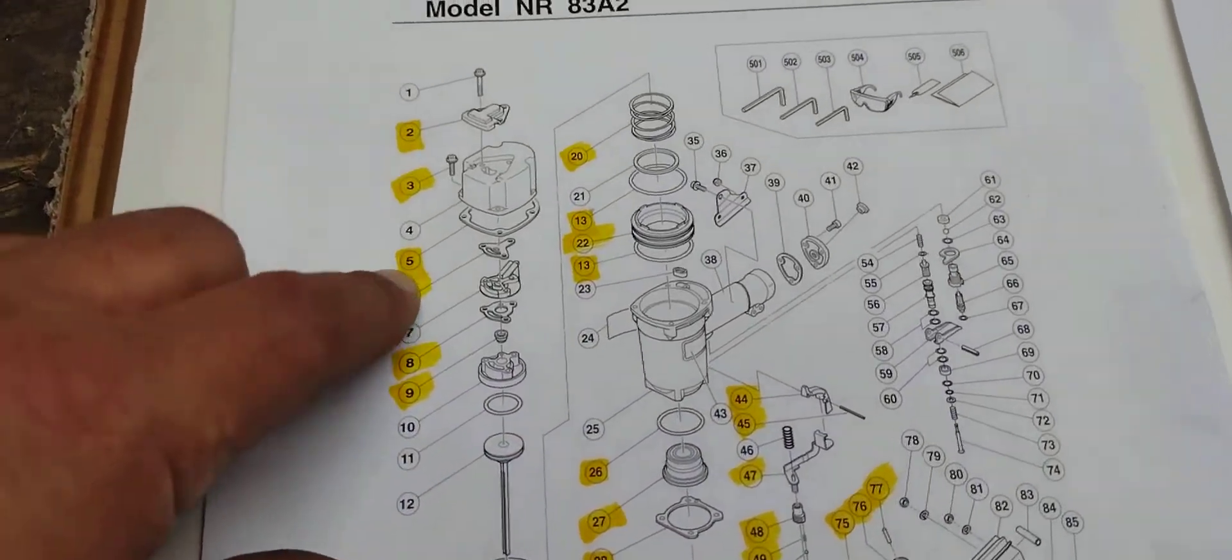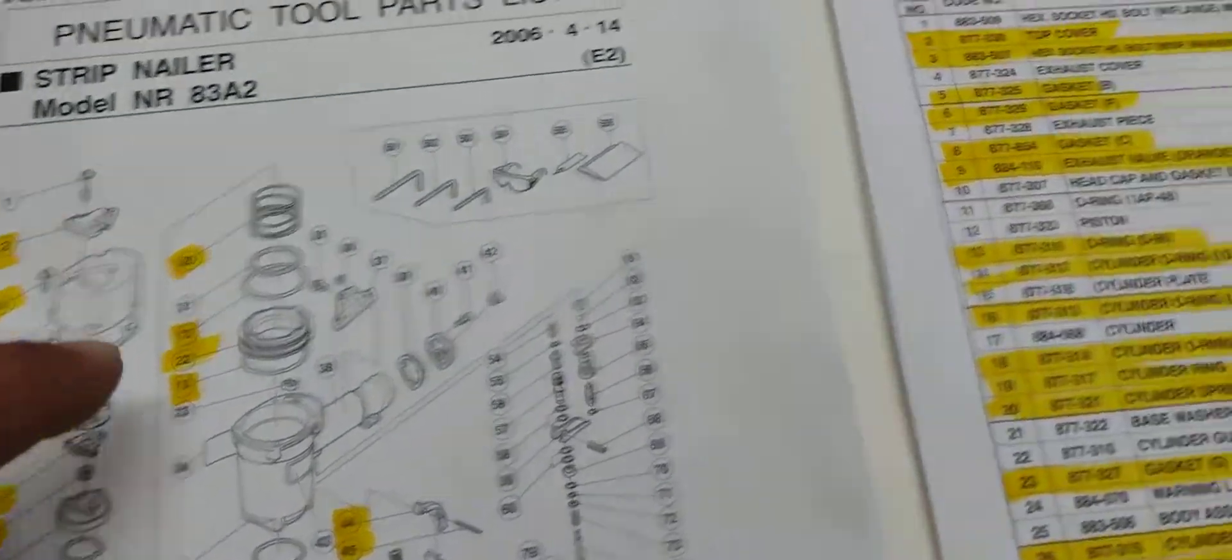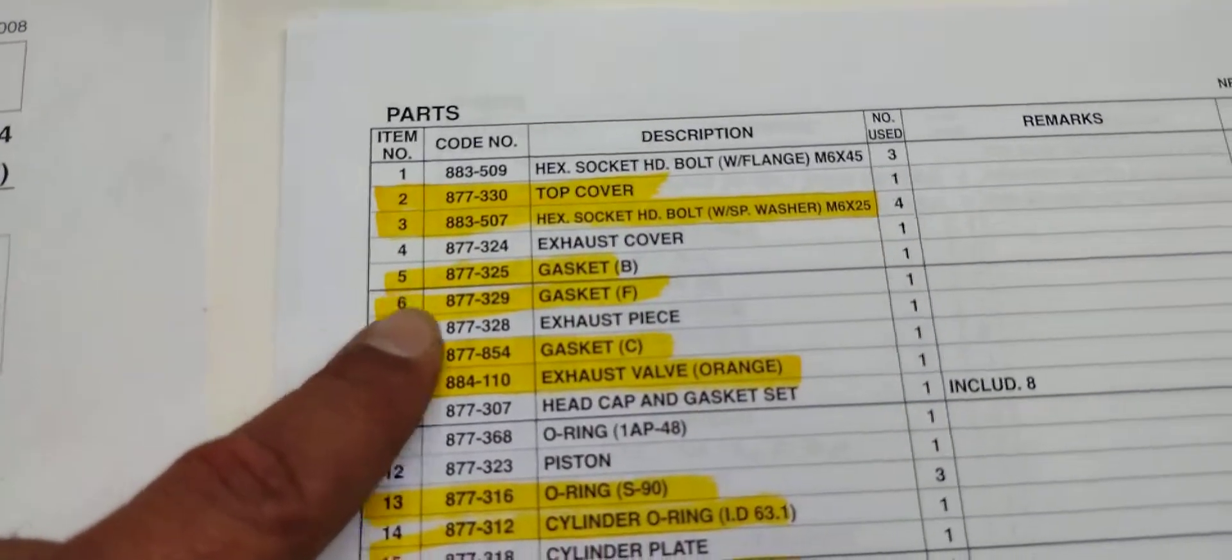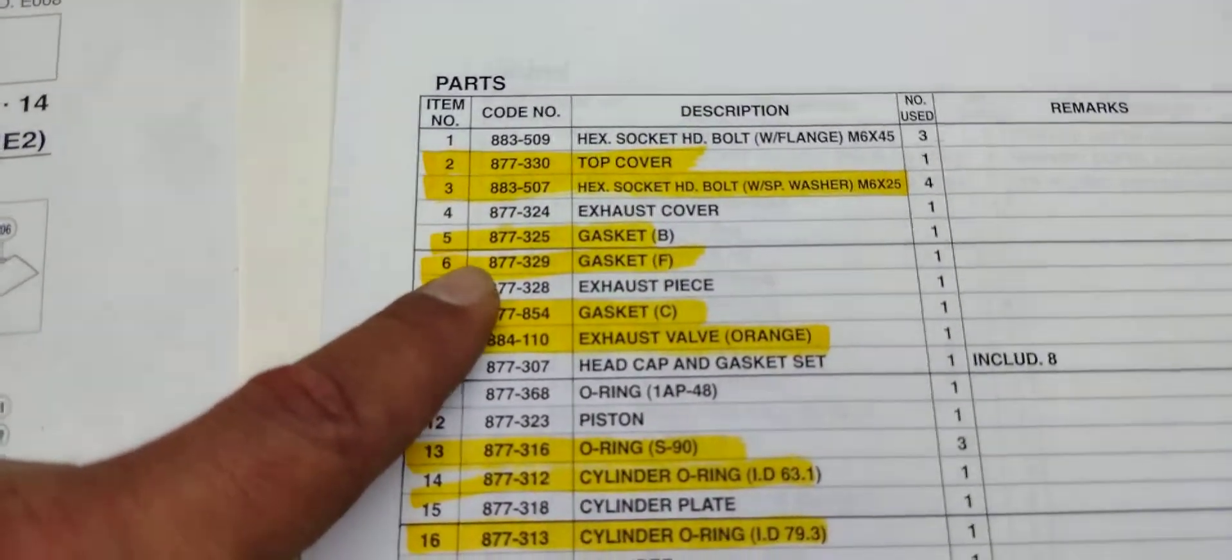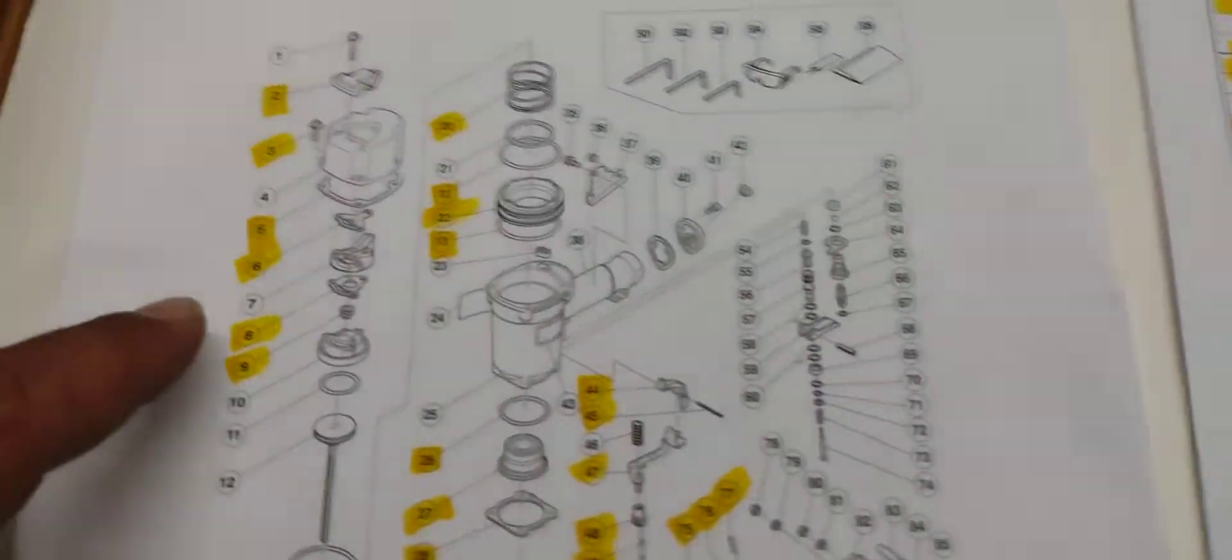In this case I'm gonna start with the gasket, the one that holds the back cover, which is number five. If I go over here I'm gonna find the number five right here. This is the item number, the one that you can order from Superior Parts.